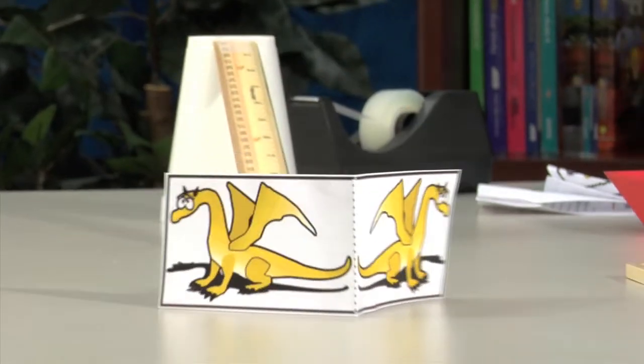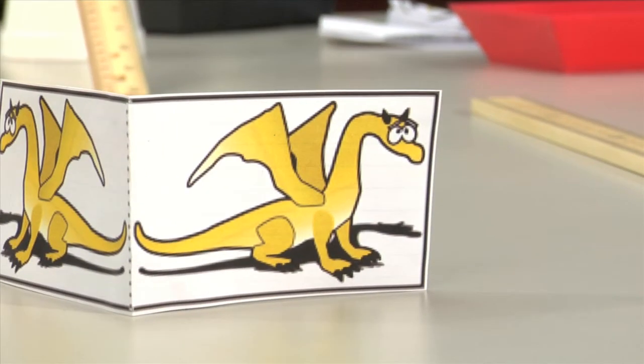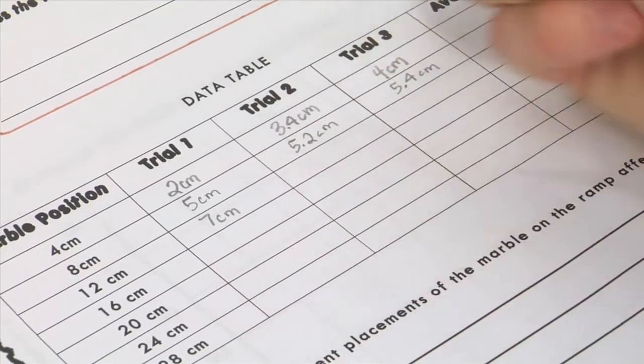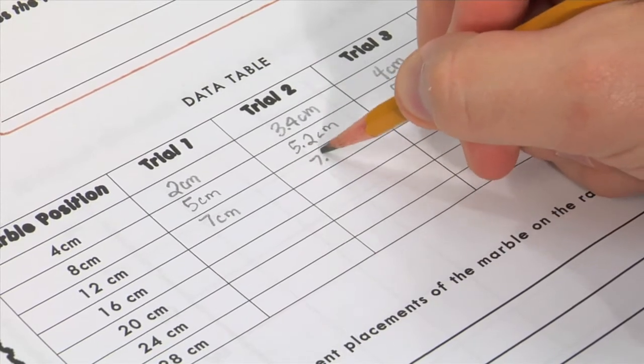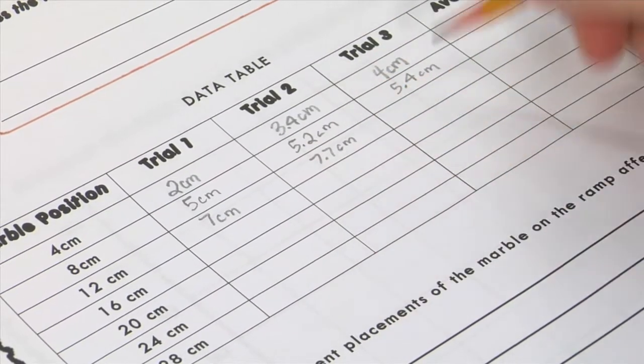Now repeat the process using the large marble and record the distance. Use the student journal to collect the data, calculate averages, and complete the activity questions.